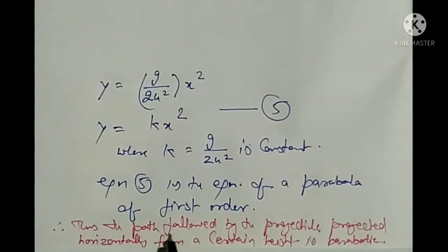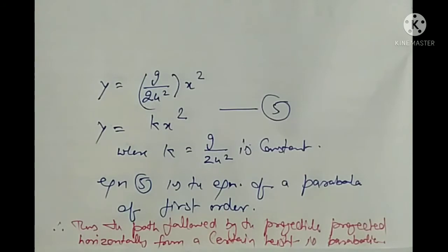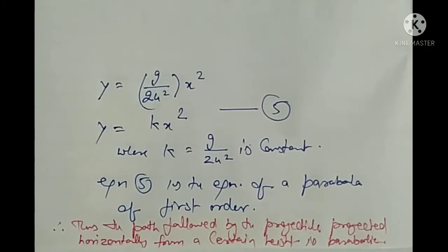Thus, the path followed by the projectile projected horizontally from a certain height is parabolic — specifically a first-order parabola.